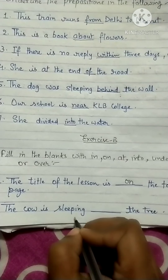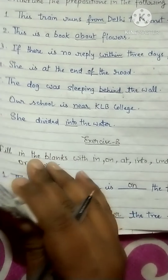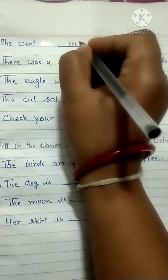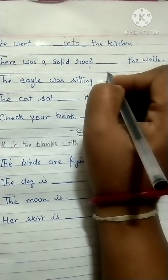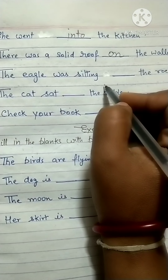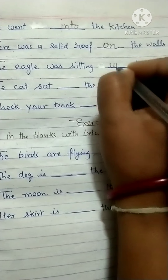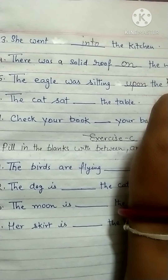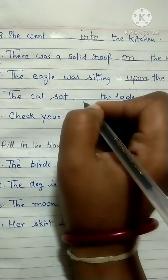'The cow is sleeping under the tree' — you can fill 'under'. 'She went into the kitchen' — 'into' will come here. 'There was a solid roof on the walls' — you can fill 'on'. 'The eagle was sitting upon the rock' — 'upon'. 'The cat sat under the table' — 'under'.